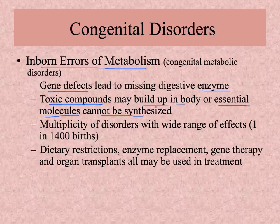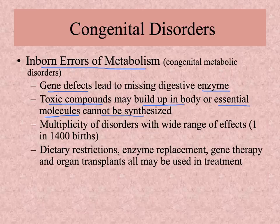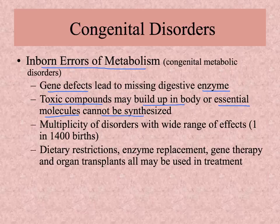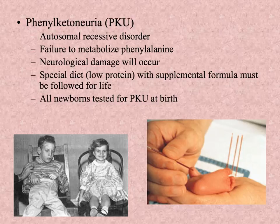You can imagine what might happen if toxic compounds are building up in your body, or if an essential molecule cannot be made. There are many inborn errors of metabolism disorders — it's estimated that one in every 1,400 births has some type of congenital metabolic disorder, but they vary greatly in severity. Some have a very small effect with compensating processes, while others may be so severe they cannot be treated. Treatments may include dietary restrictions, enzyme replacement, gene therapy, and even organ transplants.